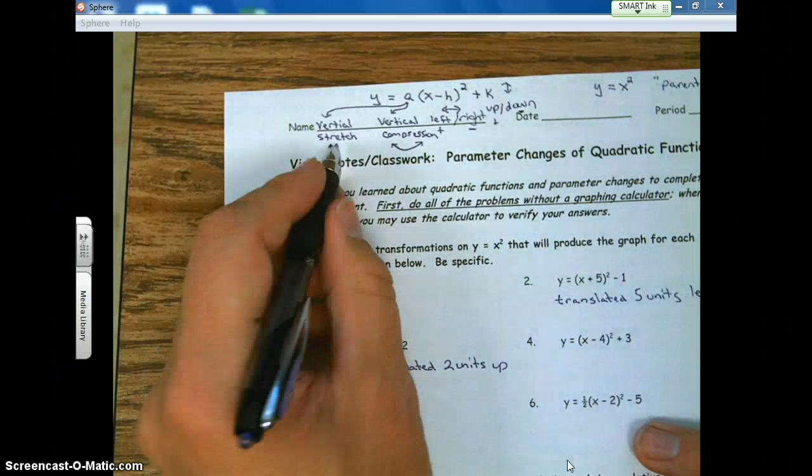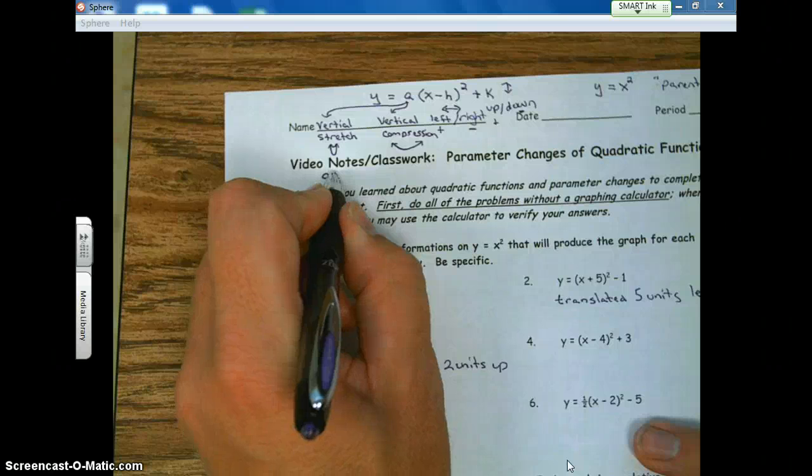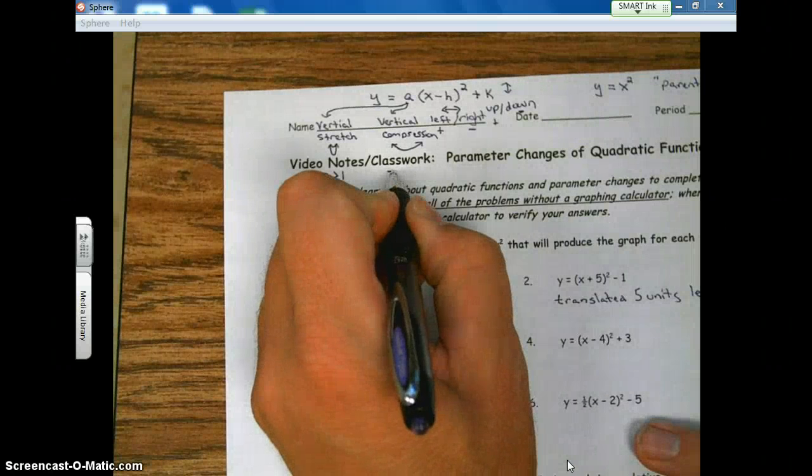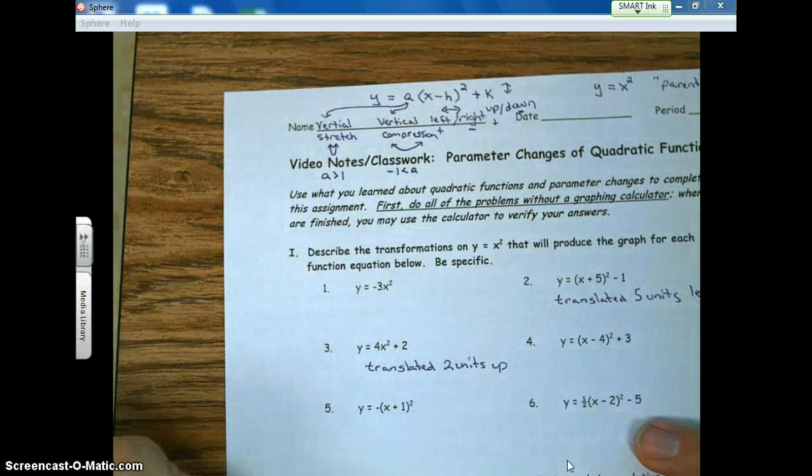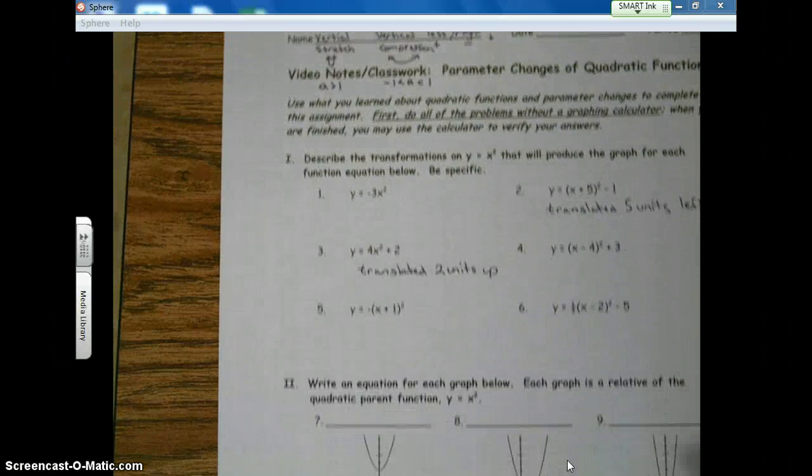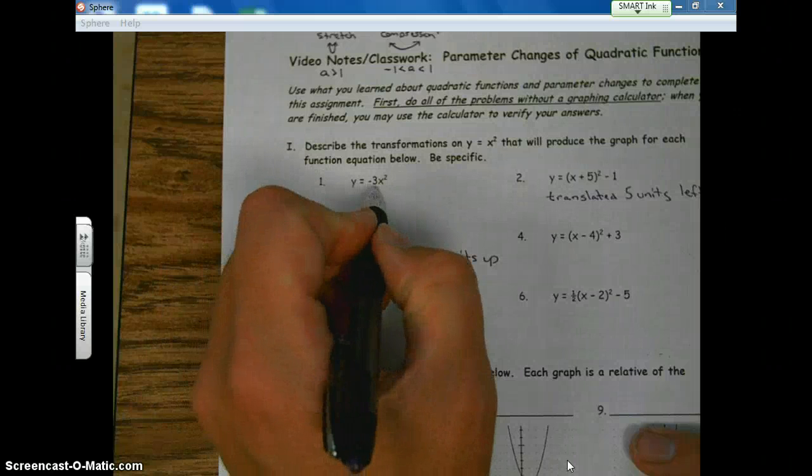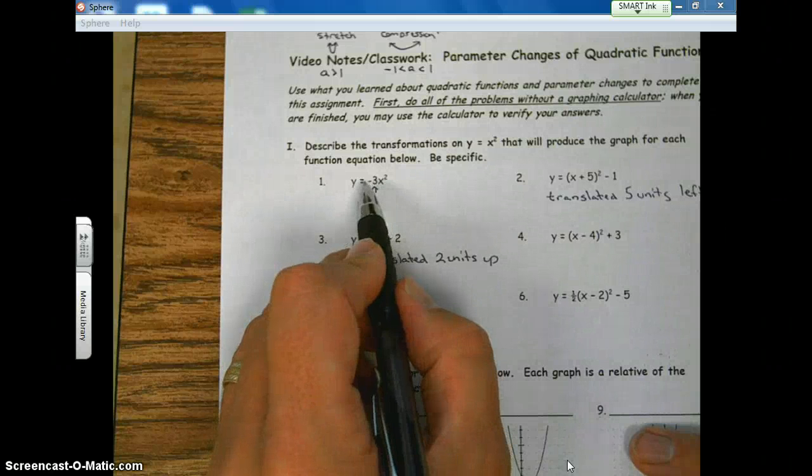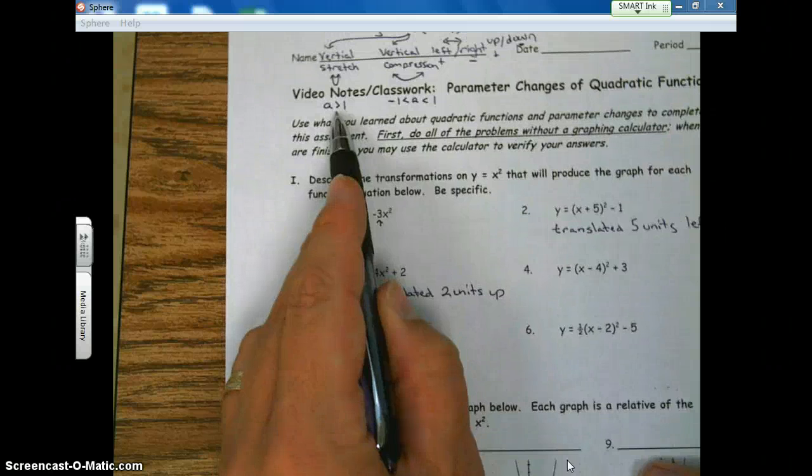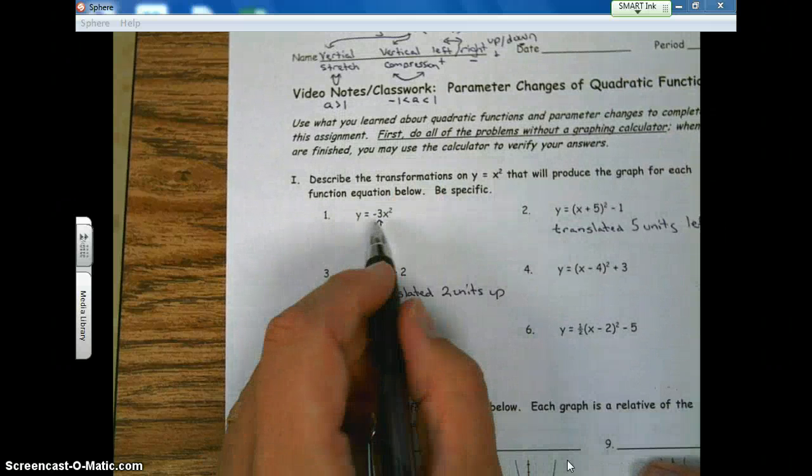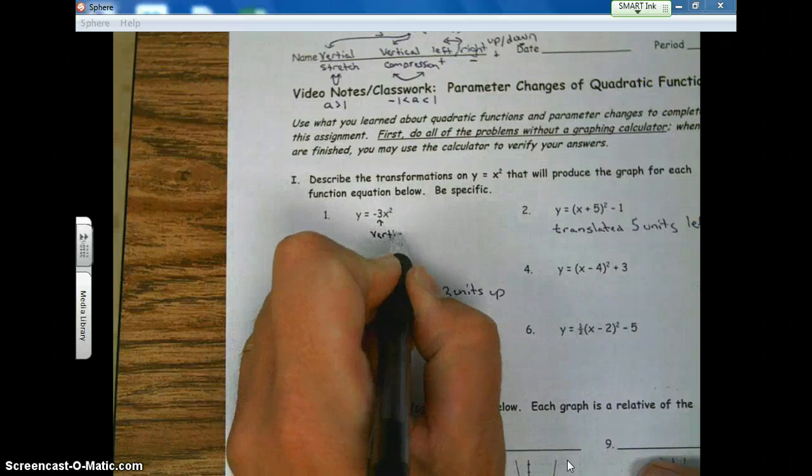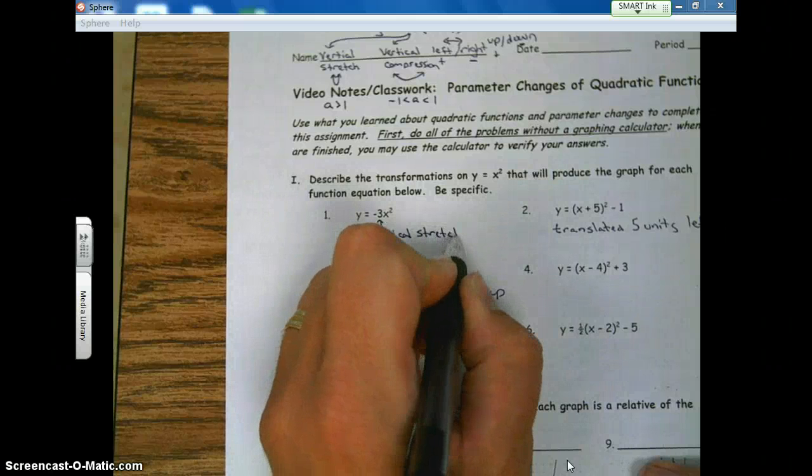Well, how do we know when it's a stretch or a compression? To know it's a stretch, your a value is going to be greater than 1. It's a compression if a falls between negative 1, greater than negative 1, but smaller than 1. All right, let's take a look. Let's look at number 1. Here's your a value. It's the number 3. Don't mind the negative right now. We'll talk about that in a little bit. The a value, is it greater than 1 or is it between negative 1 and 1? 3. Yes, it's greater than 1. So we have a vertical stretch.